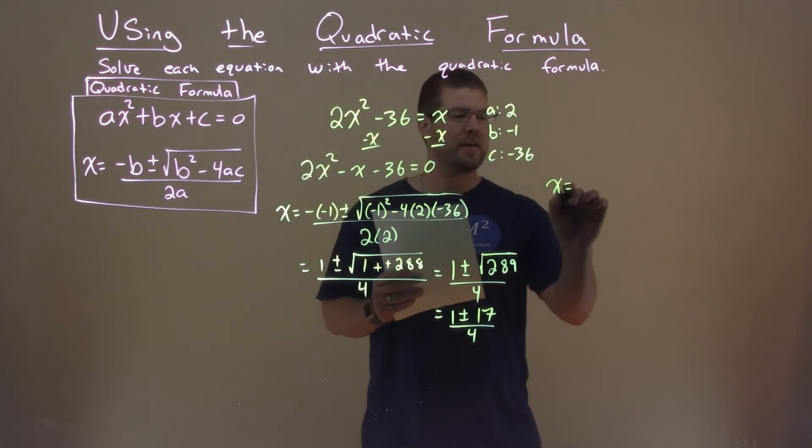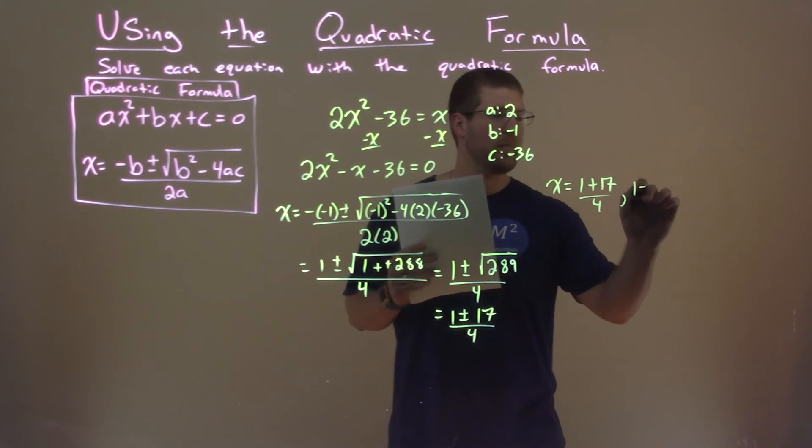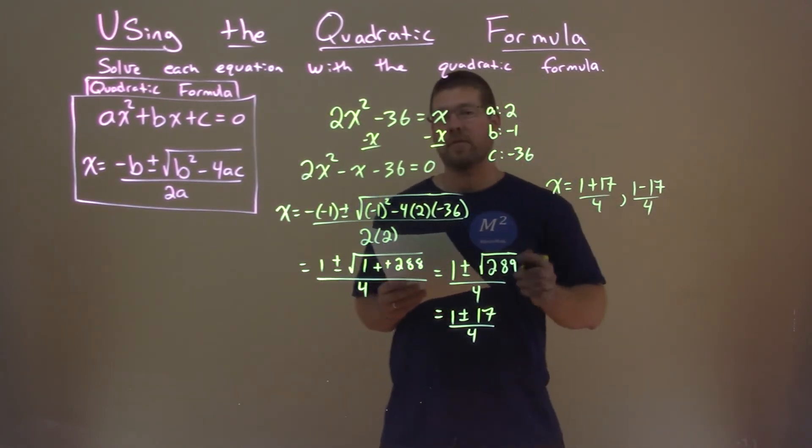So now we have one plus or minus 17 over four. So we need to solve for x for each one individually. So we're going to do one plus 17 over four, and one minus 17 over four.